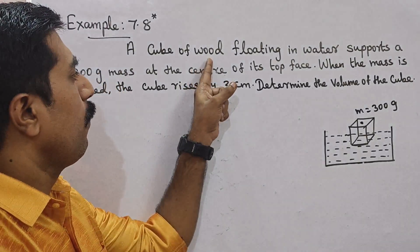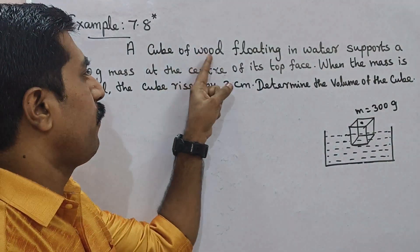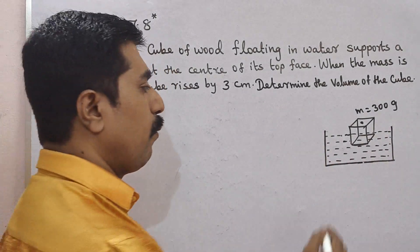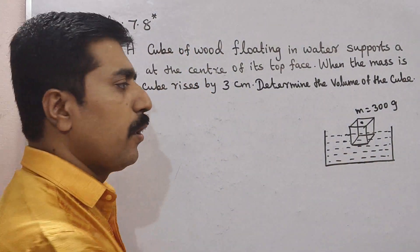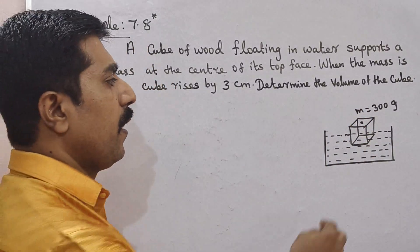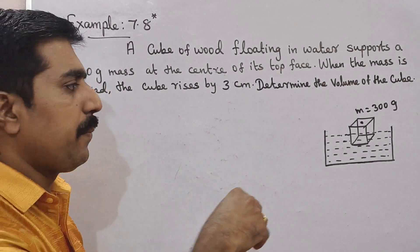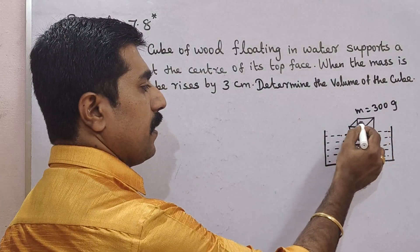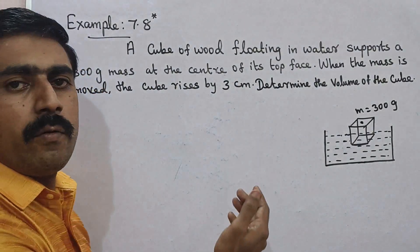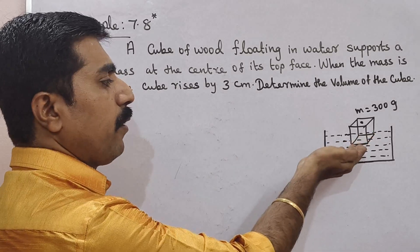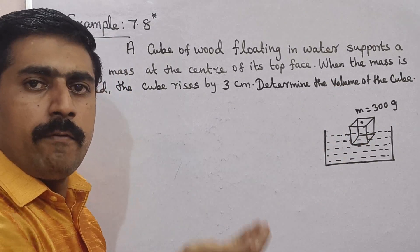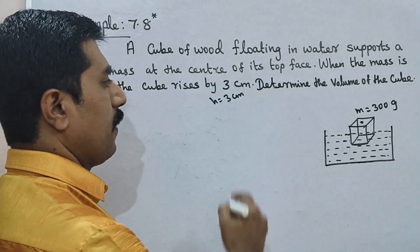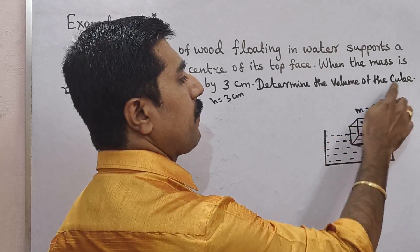First, we have a wooden piece in the shape of a cube, floating in water. Let's take a diagram — here is a beaker filled with water, containing a cubical wooden piece. A mass of 300 grams is placed at the center of its top face. When the mass is removed, the wooden cube rises up by 3 cm, so H equals 3 cm. We need to determine the volume of the cube.